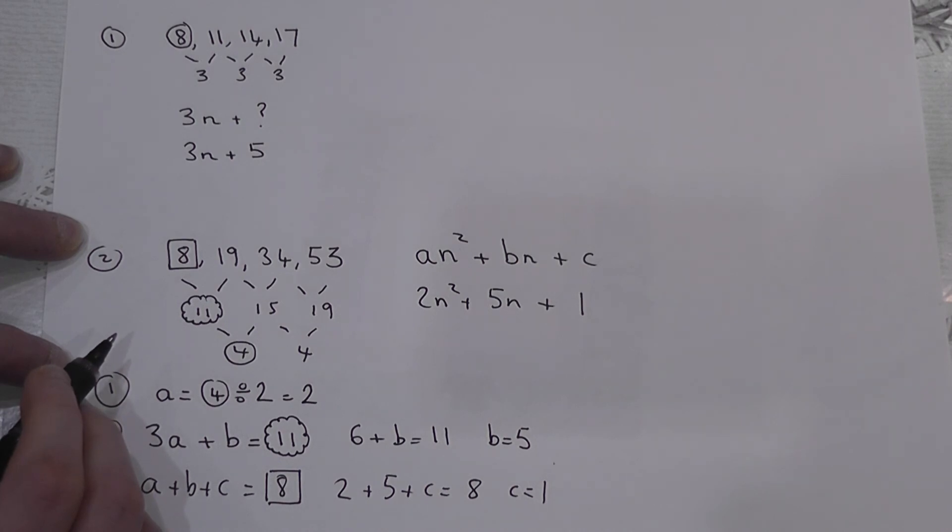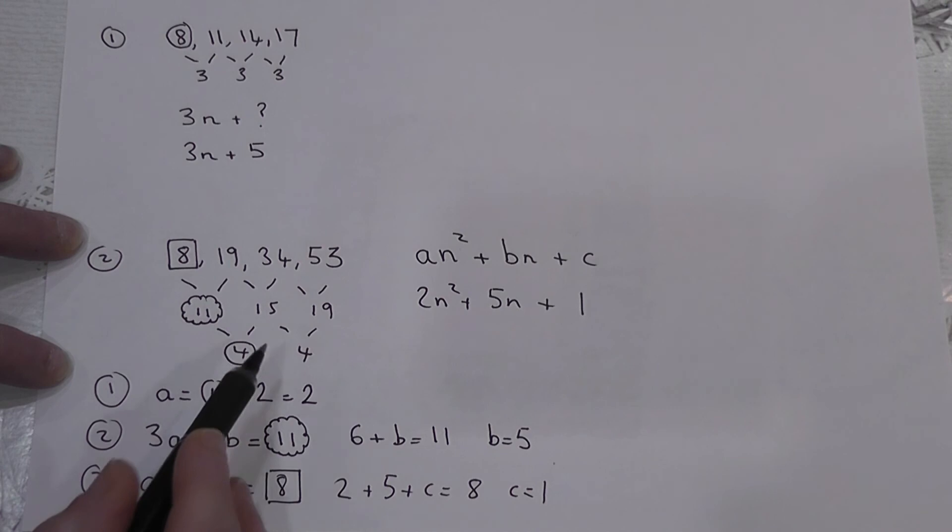And again, the tricks are very simple. a is half of the second difference. It's always 3a + b is 11.